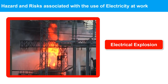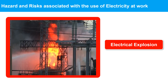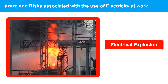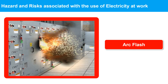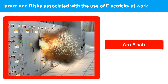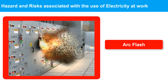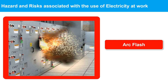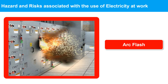Electrical explosions can occur when electrical equipment is not properly maintained or if there is a short circuit. These explosions can cause significant damage to property and pose a risk to people nearby. Arc flash is an electrical explosion that occurs when an electric arc, or discharge of electrical energy, travels through the air between conductors or from a conductor to a ground — a sudden and violent release of energy that can cause severe injury, burns, and even death.